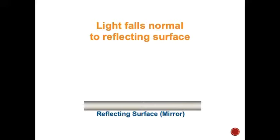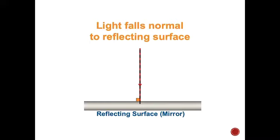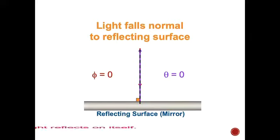If light falls normal to the reflecting surface, this incident light ray is parallel to the normal. Although the light ray makes a 90° angle with the reflecting surface, the angle of incidence is not 90° — it is zero, because the incident light ray is parallel to the normal, and the angle of incidence is measured from the normal. So phi equals zero, theta must also equal zero, and the light will reflect back on itself.